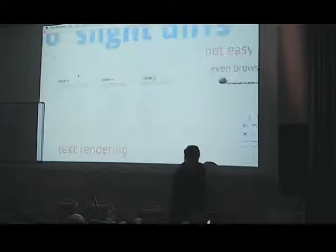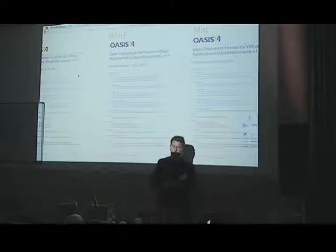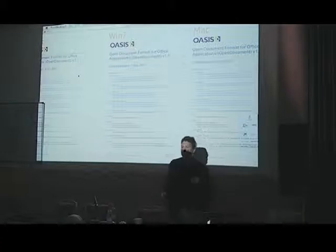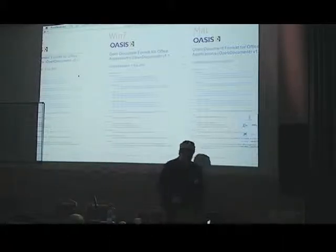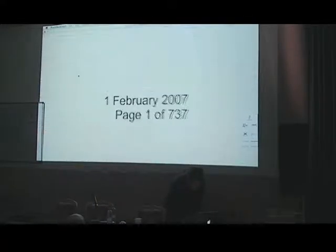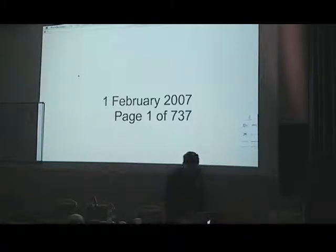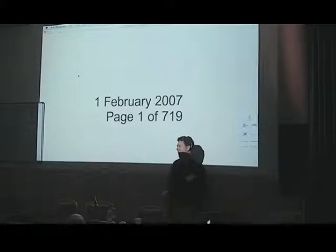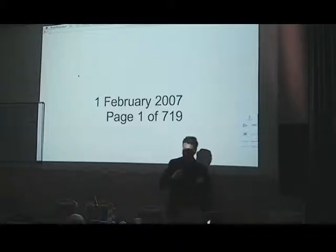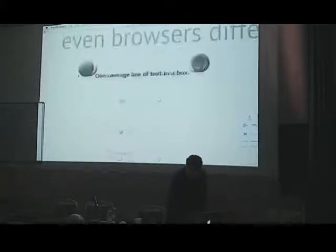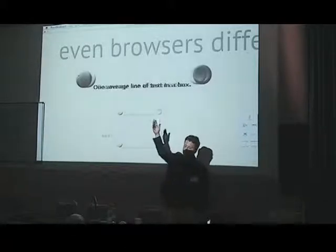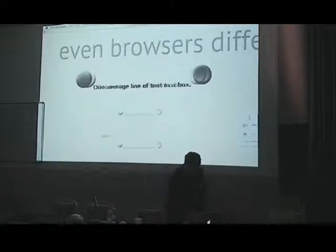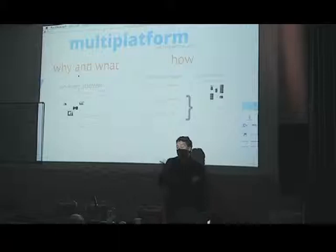Here's an example: Open Office, Open Document Format Specification, opened on three different platforms. What's the difference between the text rendering engines? Minor differences result in 737 pages on one platform versus 719 pages for the same specification — and that's a standard, with Sun, Oracle, a lot of money behind it. The same problem exists across browsers — if you put the same text on different browsers, you see slight differences. This is the problem we need to solve.